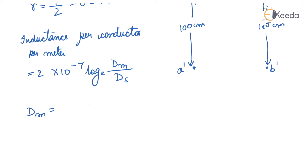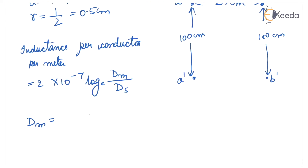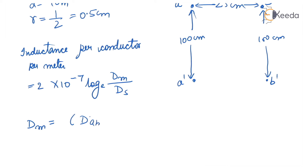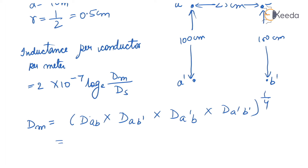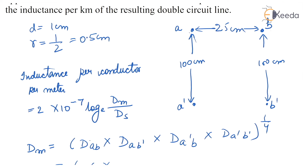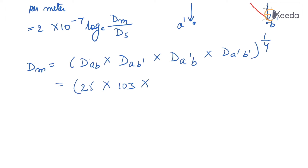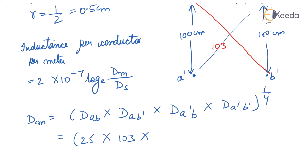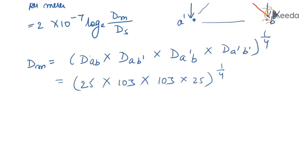Mutual GMD between phase A and B — because there are only two phases — is equal to the fourth root of: distance A to B, times distance A to B', times distance A' to B, times distance A' to B'. Distance A to B is 25 cm. Distance A to B' is √(25² + 100²) ≈ 103 cm. So dm equals the fourth root of 25 × 103 × 103 × 25, which gives 50.74 cm.